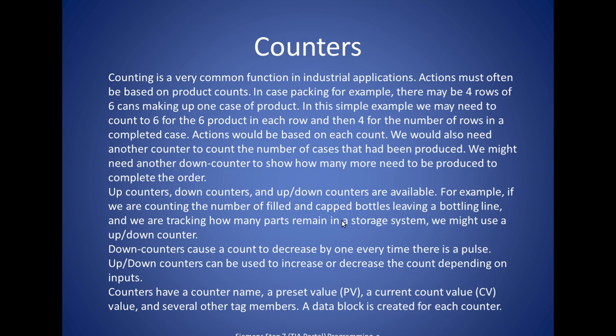Now we'll look briefly at counters. Counters are common in industrial applications because actions must often be based on product counts. For example, if we're packing a case, there might be four rows of six cans. So whenever the number of cans loaded equals six, then the state of the system would change. And whenever we've done four rows of six cans, then the state would change. There are three counters that we'll examine: up counters, down counters, and up down counters.